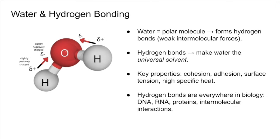Water is a polar molecule, and because of that polarity, it forms hydrogen bonds. These hydrogen bonds are weak intermolecular forces, but they are incredibly important. Thanks to hydrogen bonding, water acts as a universal solvent. Hydrogen bonds also give water several key properties: cohesion, adhesion, surface tension, and a high specific heat. These properties explain why water behaves the way it does in living systems.